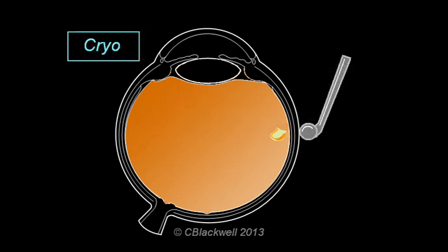Welding can also be done with a freezing probe, or cryo treatment. In this case, the freezing probe is applied to the outside of the eye. It forms an expanding ice ball that encompasses the tear. The welding effect is the same as with the laser, but it is a little tougher on the eye.